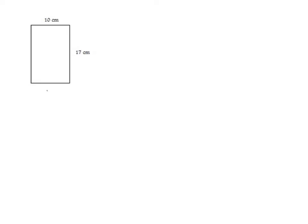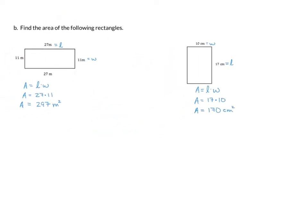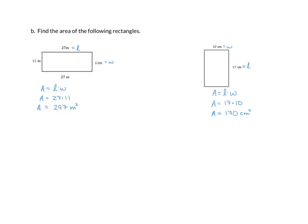Now a rectangle measuring 10 centimeters on the short side and 17 centimeters on the long side. Writing our formula A equals l times w, we let the longer side be l and the shorter side be w. Plugging in, A equals 17 times 10, which gives us 170 centimeters squared. That takes care of our rectangles.